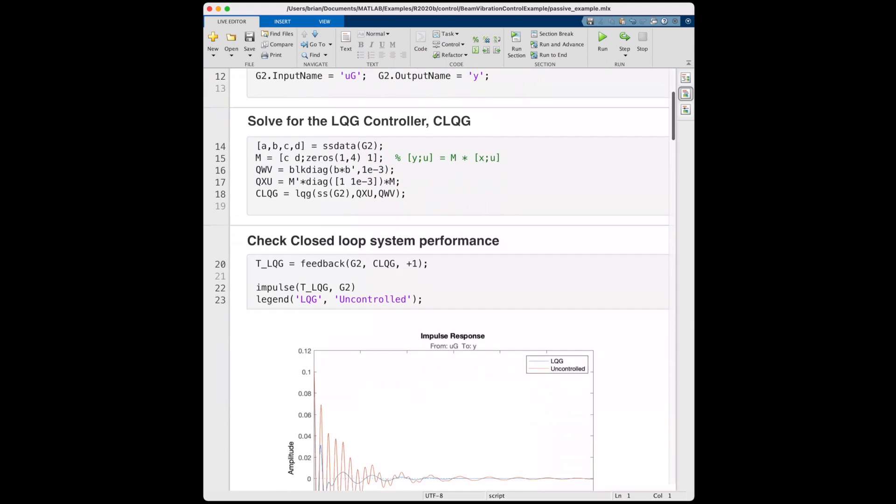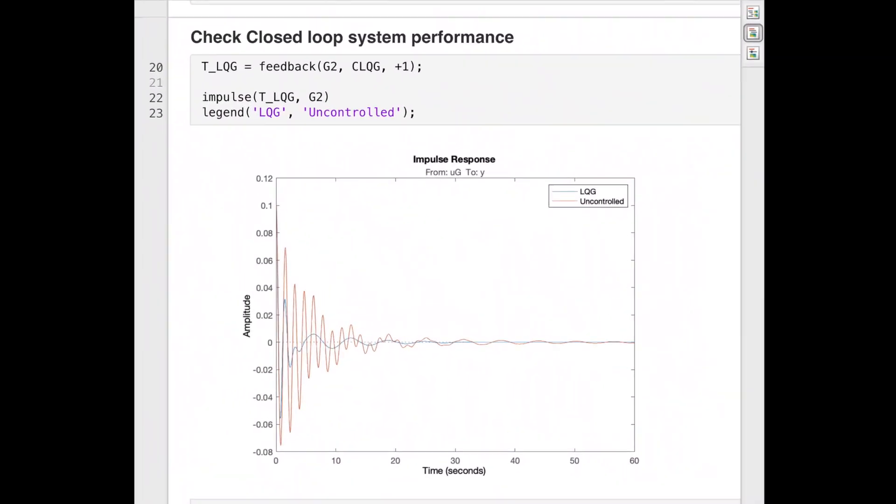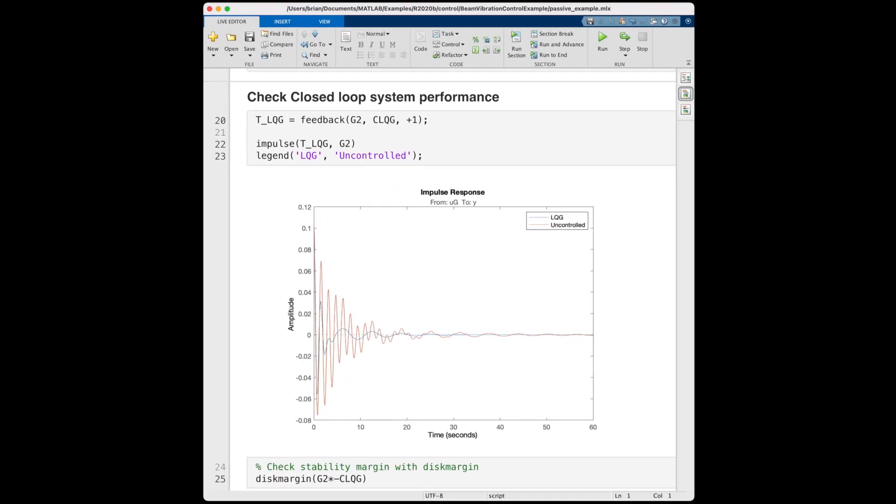Notice that these two blocks are connected through positive feedback, since we're adding the actuator command to the external disturbance. Therefore, when we create the whole closed loop system, we have to put in this plus one in the feedback function to indicate that positive connection. With this feedback system, we can look at the impulse response for both the uncontrolled system, which is in orange, and the LQG controlled system, which is in blue. We can see that our controller does in fact help reject disturbances.